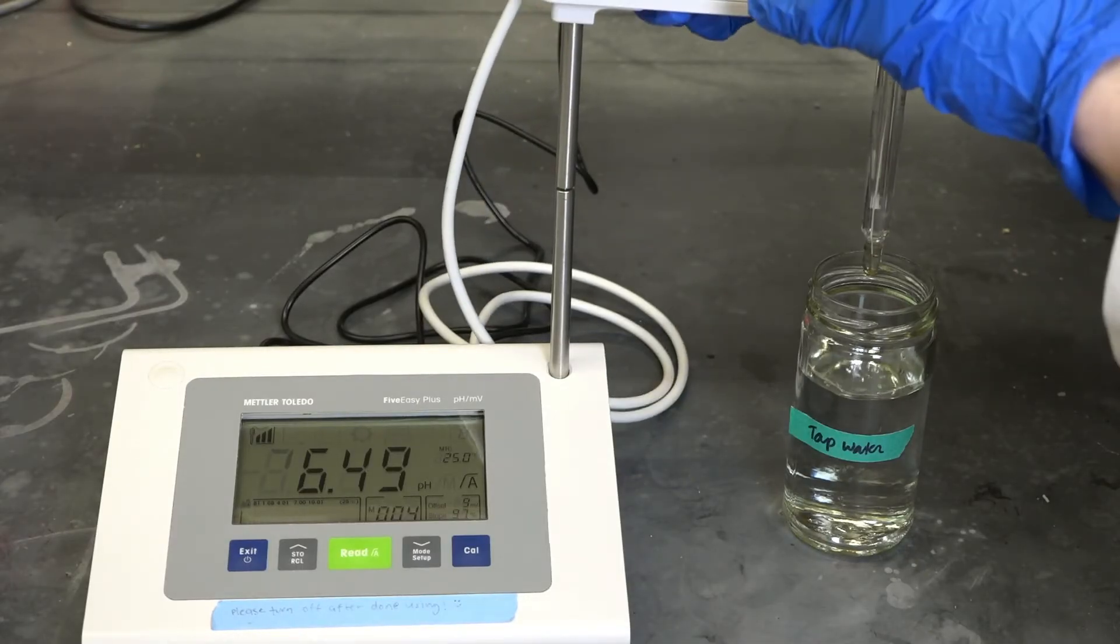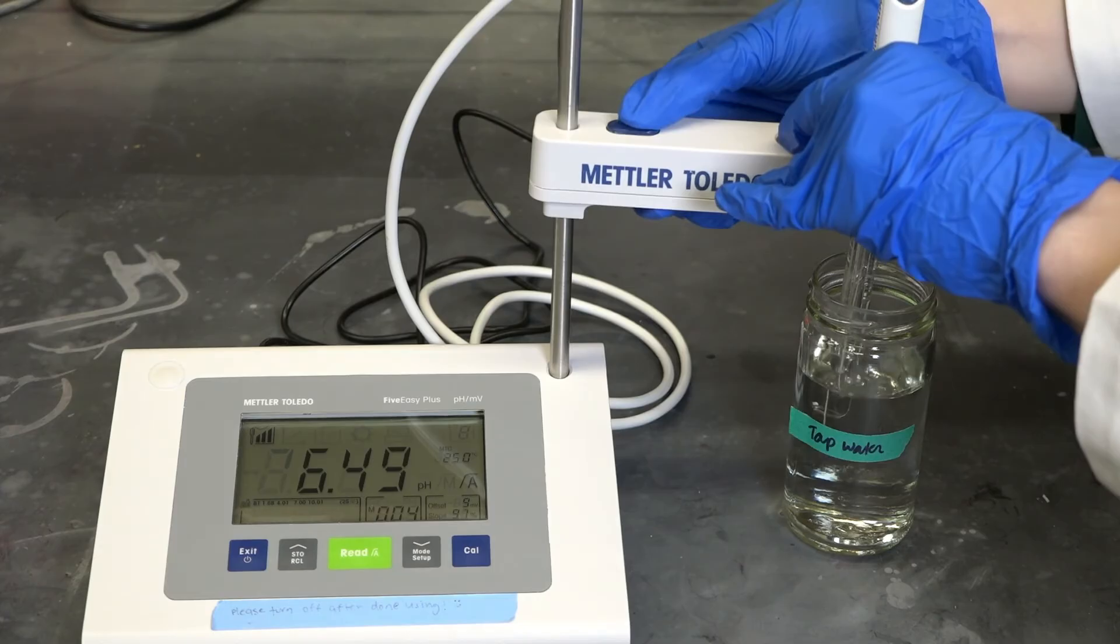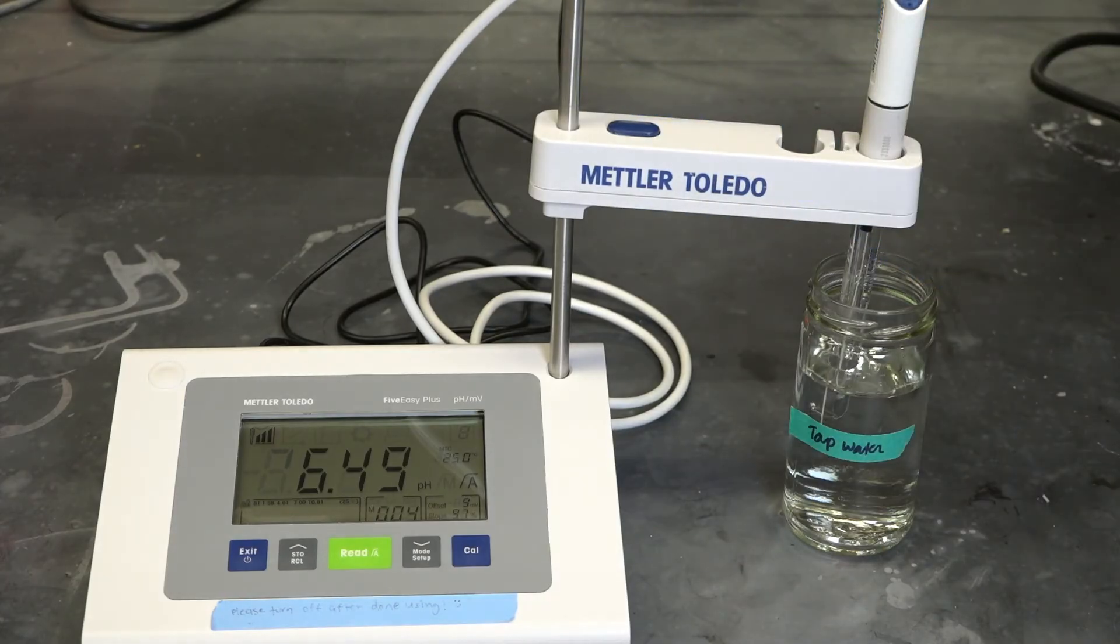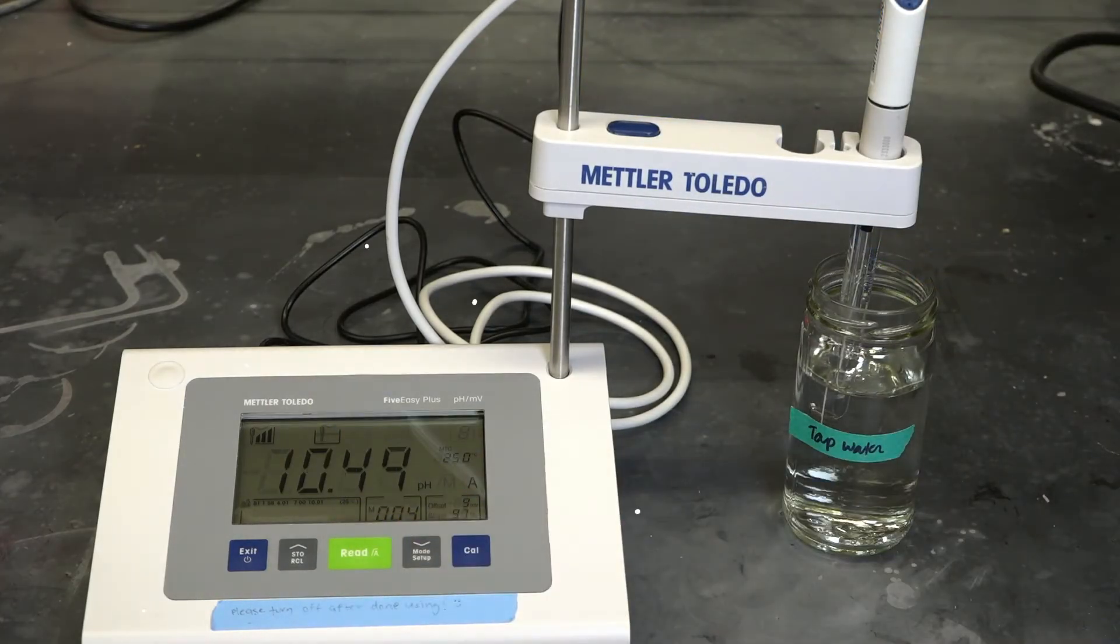By now you're a pro at electrode submersion, but this time, instead of hitting the calibrate button, you're going to hit the read button. Wait for the readout to stabilize. pH meters will often give a little beep to let you know when they're done reading the pH. So polite.